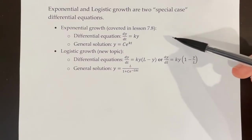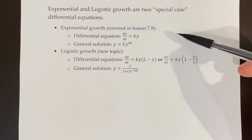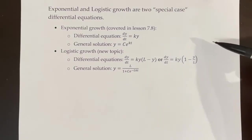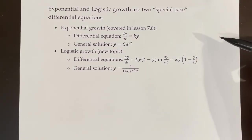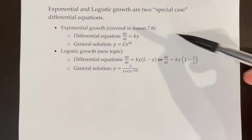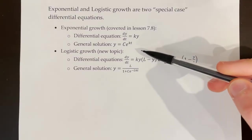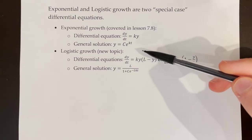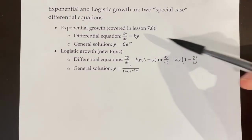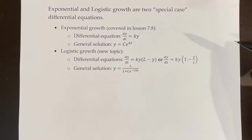For exponential growth, which we already covered in lesson 7.8, the differential equation is dy/dt equals ky, and the general solution to that differential equation is y equals ce to the power of kt.